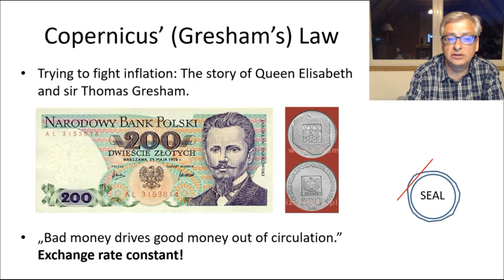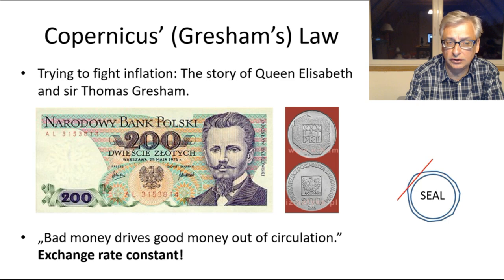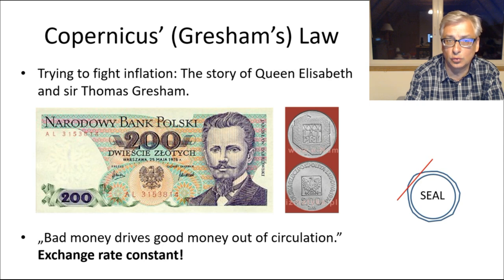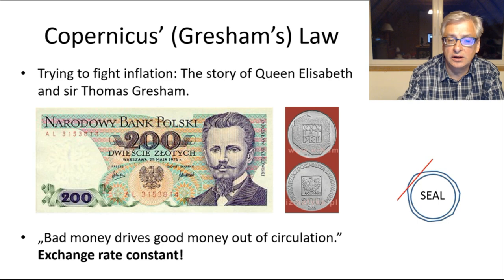The exchange rate here was constant — you couldn't buy more with the coin than with the banknote. Both were 200 złoty, the same value. So the exchange rate was constant, in this case one-to-one, and you can see bad money driving good money out of circulation.